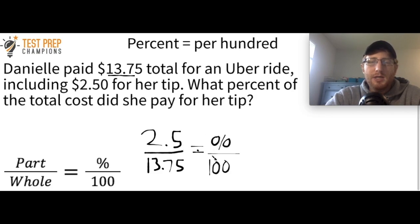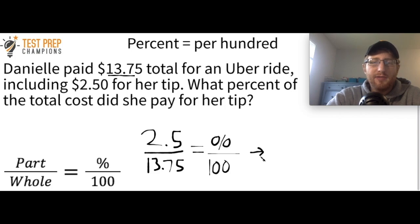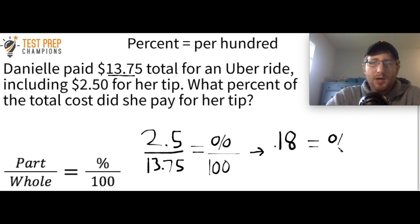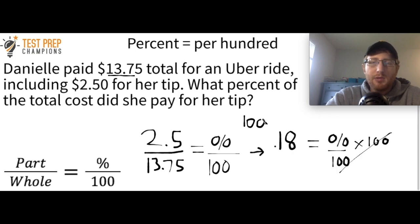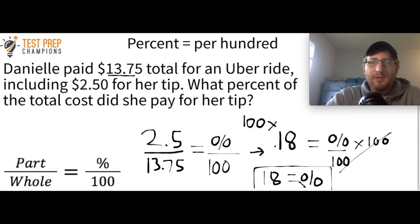So you should set this up as: 2.5 over 13.75 equals percent over 100. What we're going to do is solve for the percent. I like to do 2.5 divided by 13.75 first, which gives me 0.18. So I have 0.18 equals percent over 100. Since it's percent divided by 100, if I multiply both sides by 100, the hundreds cancel out and give me the percent. So 100 times 0.18 equals 18 — the answer is 18 percent.